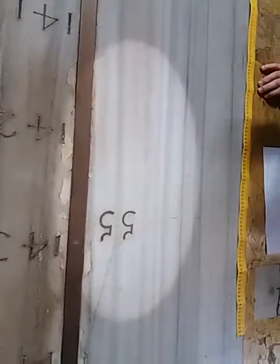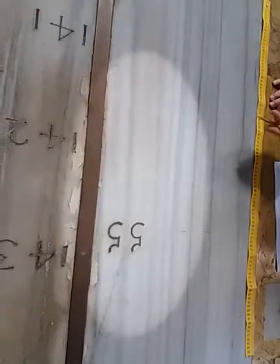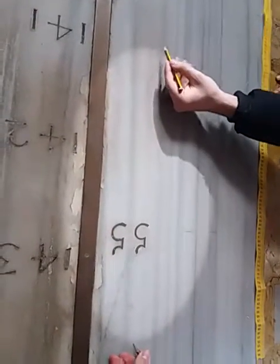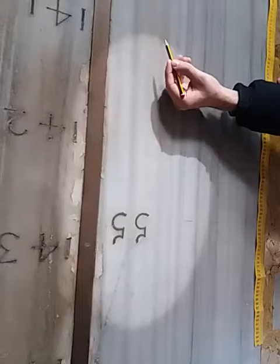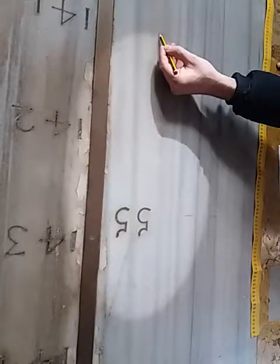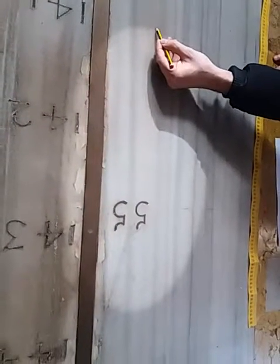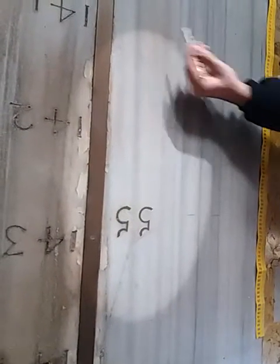Sto facendo una media a occhio tra la fluttuazione interna e l'esterno. Prendi il bordo esterno — quello più lontano dal centro. È l'ombra, non è luce.